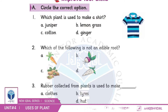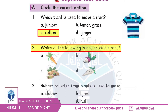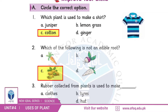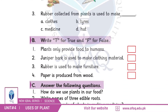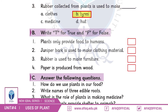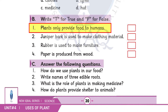Circle the correct option. Which plant is used to make a shirt? Option C — cotton. Which of the following is not an edible root? Option C. Rubber collected from plants is used to make tires.